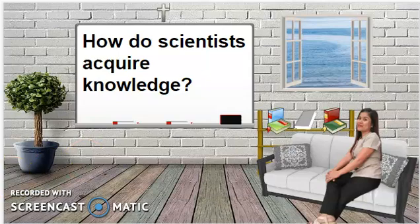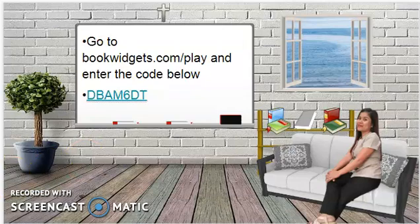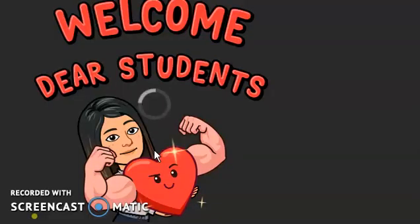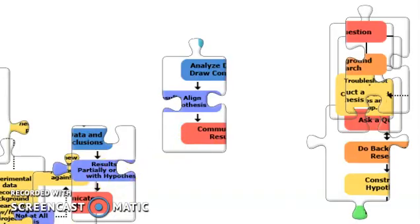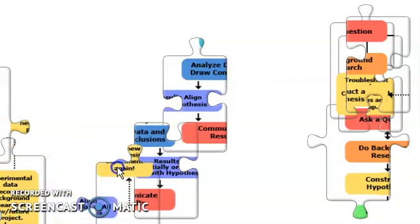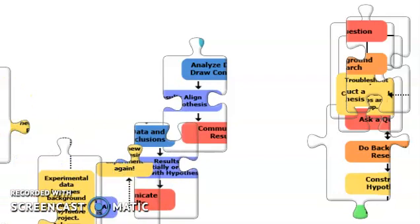Before you answer that question, let us first play this activity. Go to bookwidgets.com/play, enter the code, and view the widget. Students, you need to arrange the puzzles — you have to complete this jigsaw puzzle before we proceed.